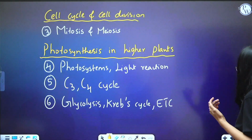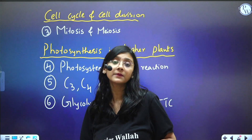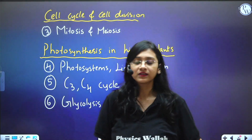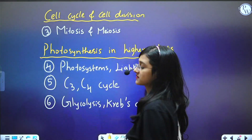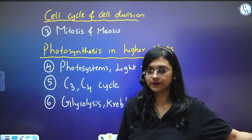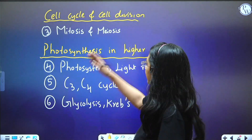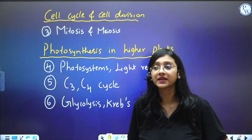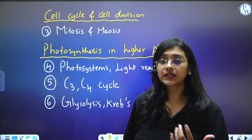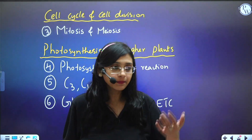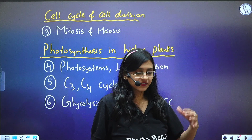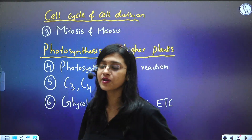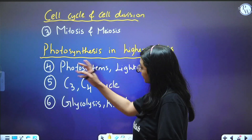The third topic is Cell Cycle and Cell Division — mitosis and meiosis. What is important in this chapter is mitosis and meiosis in detail, covering all the phases. In prophase of meiosis we see different sub-phases, so that also you need to study. There are mainly certain numerical questions — they may give you the number of chromosomes in a diploid cell and ask for the chromosome number in different phases of meiosis or mitosis.